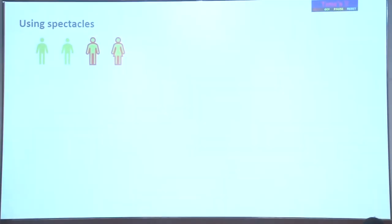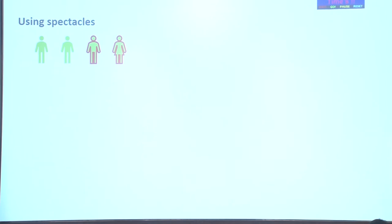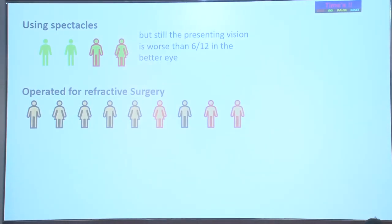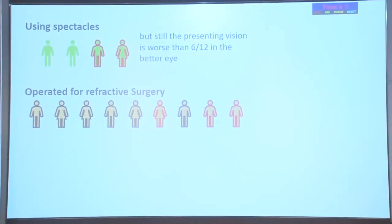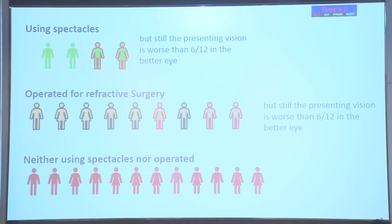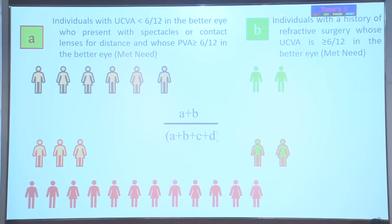The calculation is quite similar to the effective cataract surgical coverage. Simply speaking, if we have four people who use spectacles, there may be two people who have presenting vision worse than 6/12. And suppose we have people operated with refractive surgeries like LASIK and SMILE, there will be few people who still have presenting vision less than 6/12 in the better eye. The numerator becomes those people who have a visual acuity greater than 6/12 in the better eye — that is the met need — which may be with spectacles or with refractive surgery.